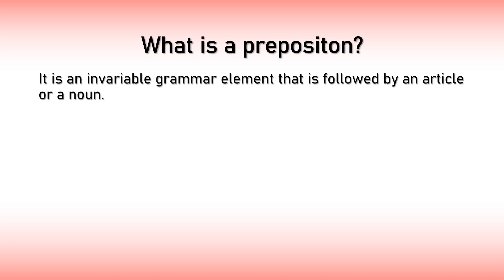So what is a preposition? It is an invariable grammar element that is followed by an article or a noun. By invariable I mean that they do not depend on gender, number, or the tense of the verb, so they will always have the same form. You do not have to change them depending on those factors. So that is at least a positive side.